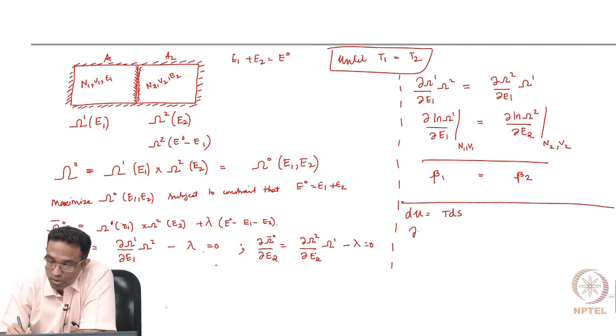So dou s by dou u at constant n and v turns out to be 1 by T.